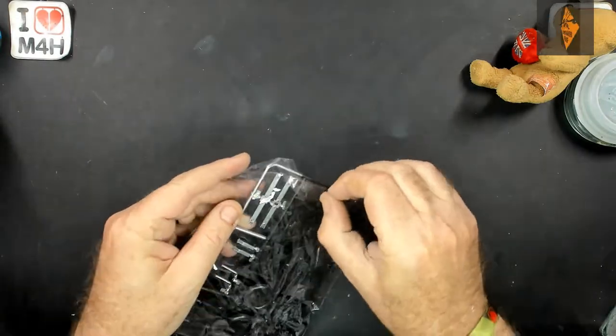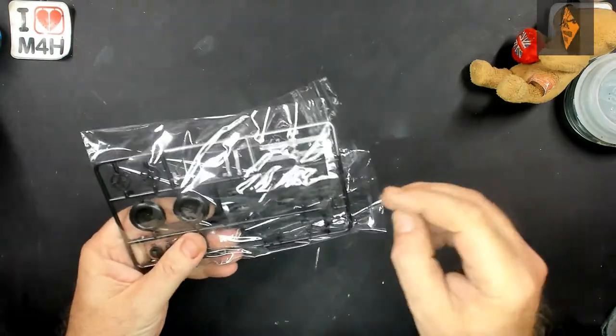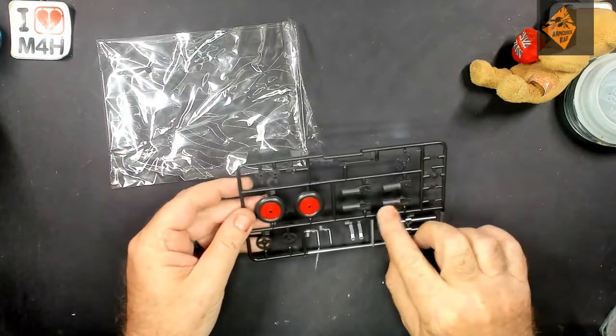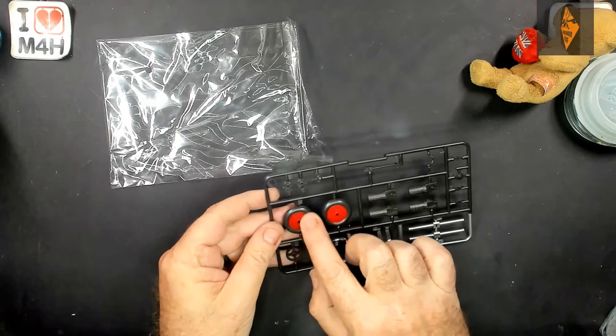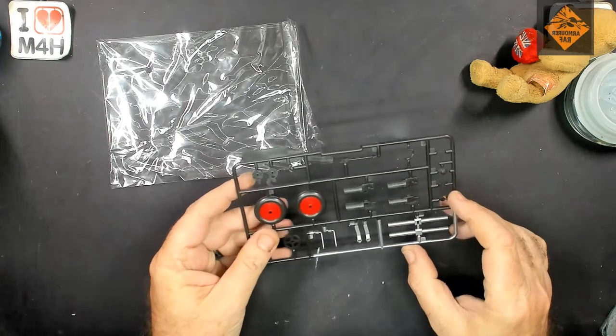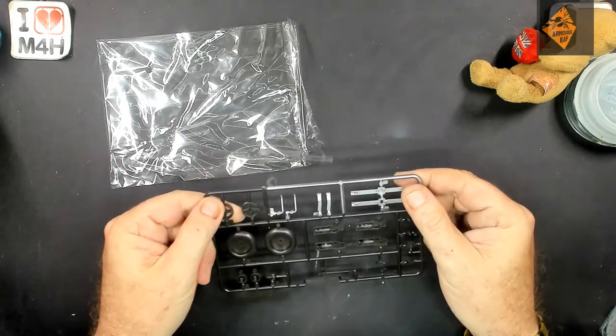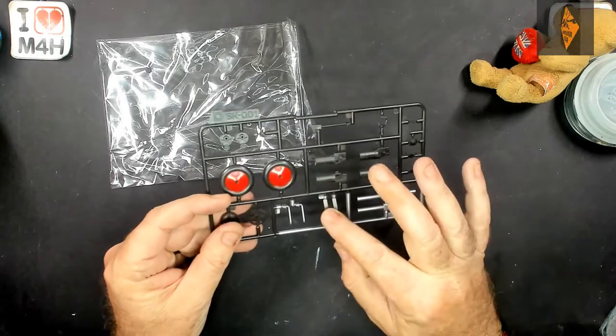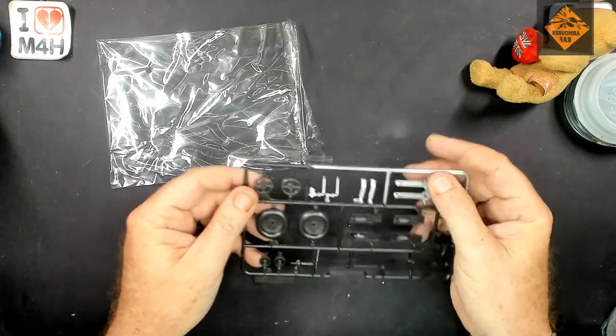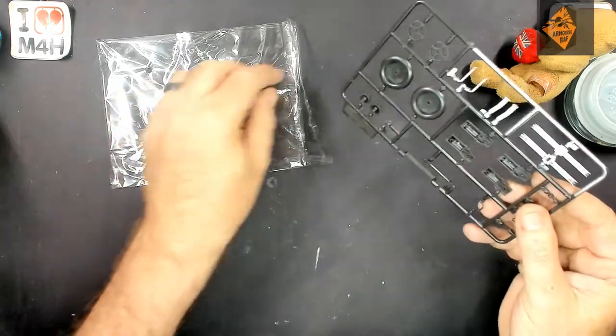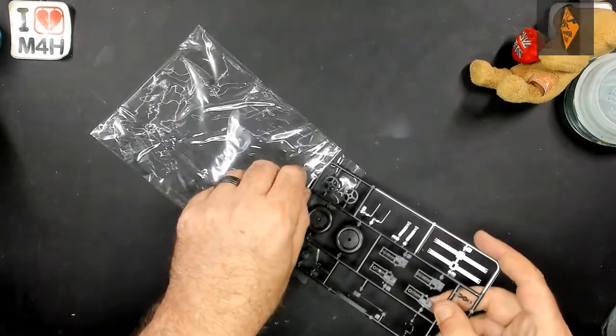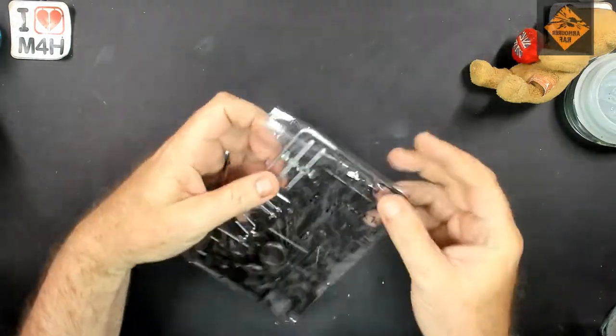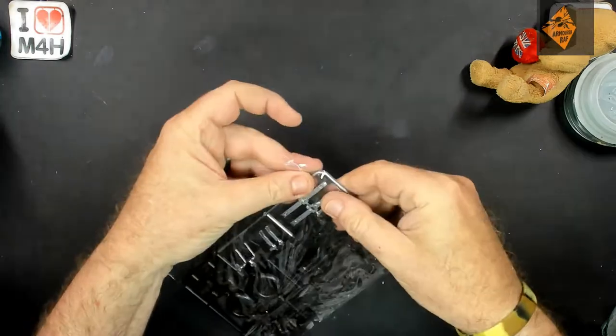Right. Another set of coloured sprues. So these are chrome and black. So again, we'll be priming these. There's the guns and the exhaust system and the belt feeds for the machine guns. Yeah. Detail is really really nice on this. So let's pop that back in the bag. Pop that to one side.